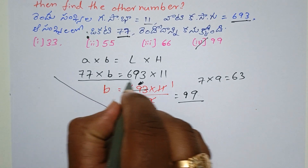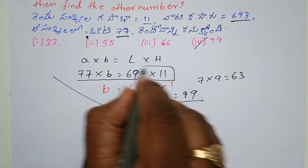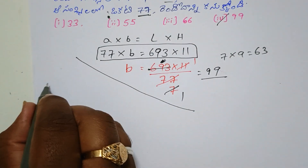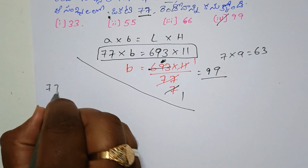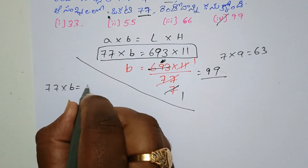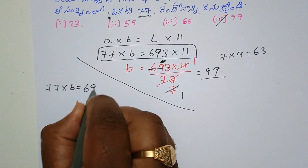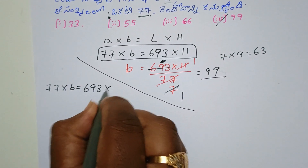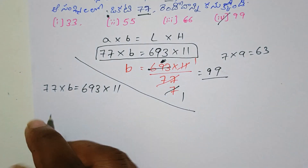Let's discuss this line. 77 into B equals 693 into 11.